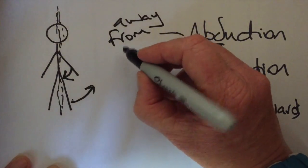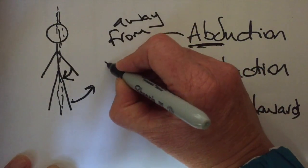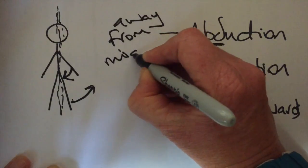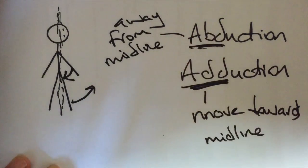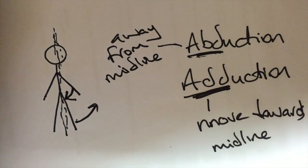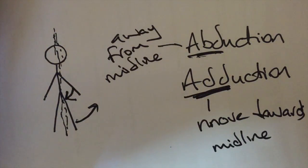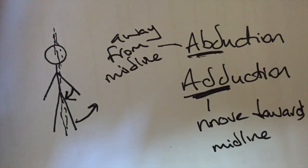Your star jump is your classic example, but have a think about some other sporting movements and I'm sure you'll be able to think of other examples of abduction and adduction. I hope you find that useful, thanks.